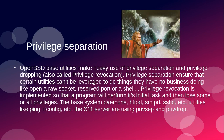Privilege separation. OpenBSD-based utilities make heavy use of privilege separation and privilege dropping, also called privilege revocation. Privilege separation ensures that certain utilities can't be leveraged to do things they have no business doing, like opening a raw socket, reserved port, or shell. Privilege revocation is implemented so that a program will perform its initial task and then lose some or all of its privileges along the way — like ping, which loses socket privileges after accessing that socket. The base system daemons, httpd, sendmail, sshd, utilities like ping, ifconfig, and the X11 server — almost all base utilities in OpenBSD are using privilege separation and privilege revocation.